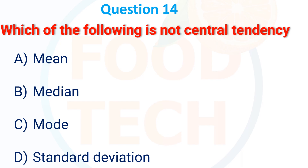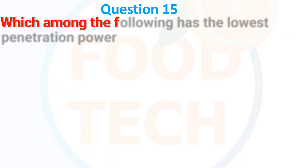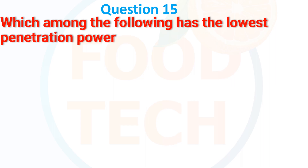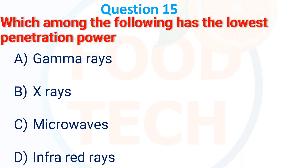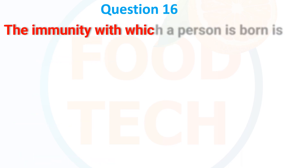Which of the following is not a measure of central tendency? A) mean, B) median, C) mode, D) standard deviation. The answer is D — standard deviation. Which among the following has the lowest penetration power? A) gamma rays, B) X-ray, C) microwaves, D) infrared rays. The answer is microwaves.